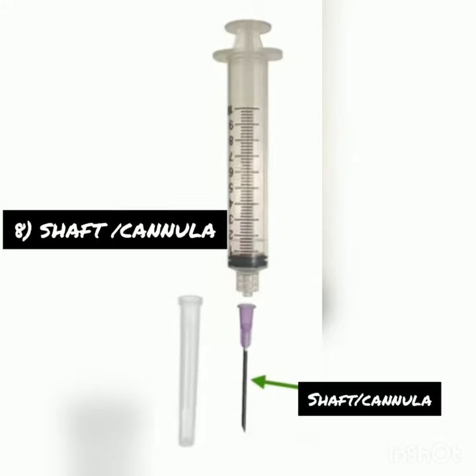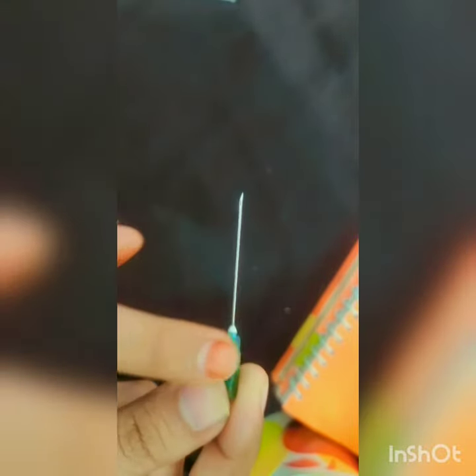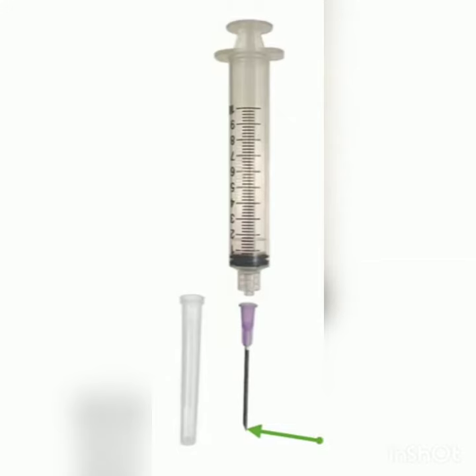Shaft or cannula: it is the long slender stem of the needle that is beveled at one end to form a point. The uppermost part is the bevel, which is the slanted part of the needle.